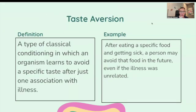Taste aversion: a type of classical conditioning in which an organism learns to avoid a specific taste after just one association with illness. After eating a specific food and getting sick, a person may avoid that food in the future, even if the illness was unrelated.